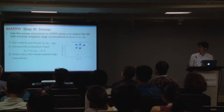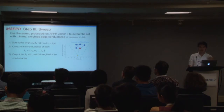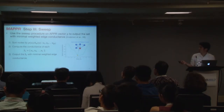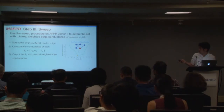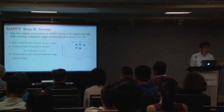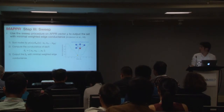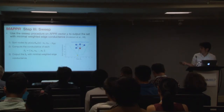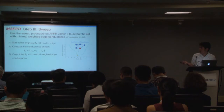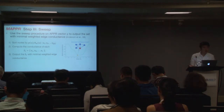In the third step, after computing the APPR vector P, we apply a sweep procedure to output a set with minimum weighted edge conductance. This involves three steps: first, sort every node by the ratio of P(u) to the weighted degree of node u. After this normalization and sorting, u1 is the most important node to the seed, u2 is the second most important, and so on. We then consider a series of sets S_R containing the most important nodes to the seed, and output the set S with minimal weighted edge conductance.